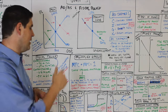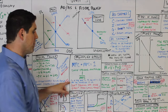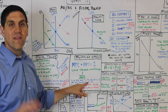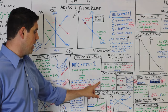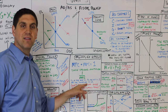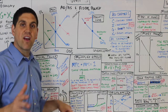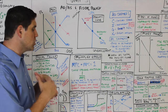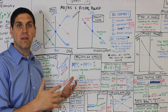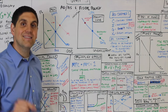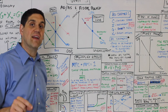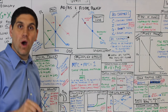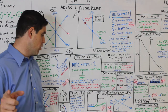You have to be able to calculate: if the marginal propensity to consume is 0.9, that means the marginal propensity to save is 0.1, so the multiplier is 10. So if the government increases government spending, it'll get multiplied times 10. Also remember that taxes have a lessened effect because the tax multiplier is 1 less than the spending multiplier.